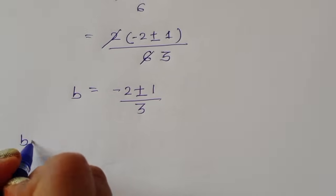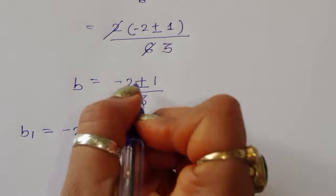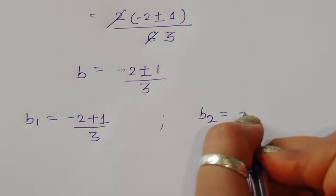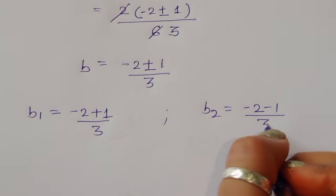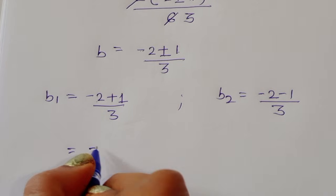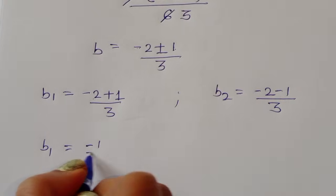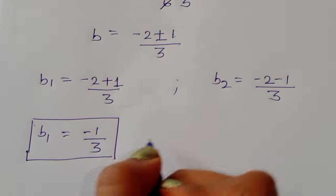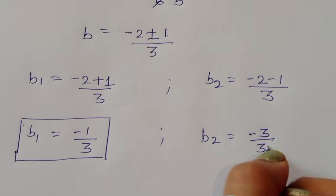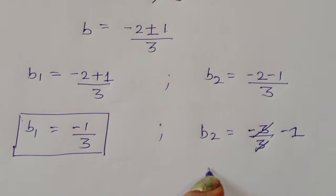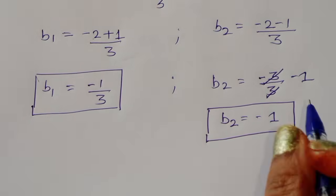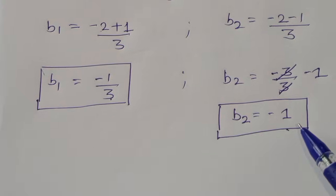So the two values are: b1 equals (minus 2 plus 1) divided by 3 equals minus 1 divided by 3, and b2 equals (minus 2 minus 1) divided by 3 equals minus 3 divided by 3 equals minus 1. We got two values: b1 = -1/3 and b2 = -1.